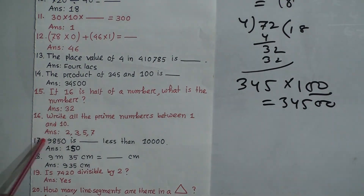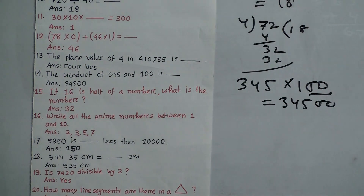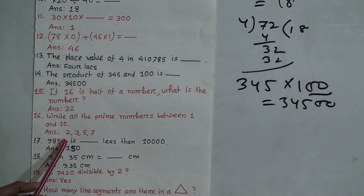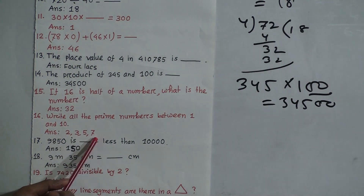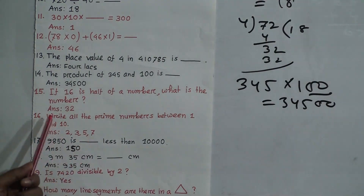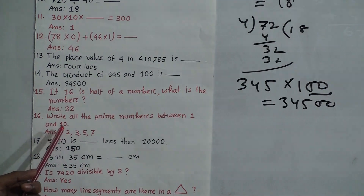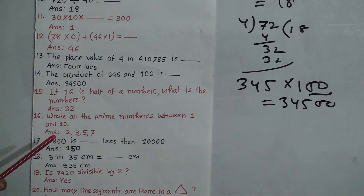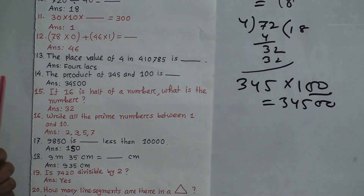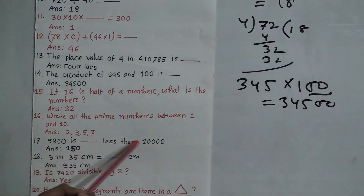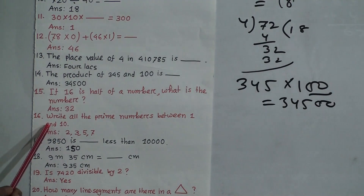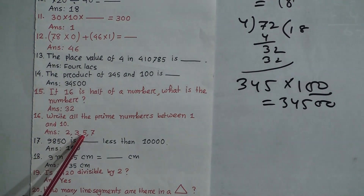Question 16: Write all the prime numbers between 1 and 10. Prime numbers have exactly two factors. Between 1 and 10, the prime numbers are 2, 3, 5, and 7. Note that 4 and 9 are composite numbers — 9 is also composite, so we can't select it as prime. The required prime numbers between 1 and 10 are 2, 3, 5, and 7.